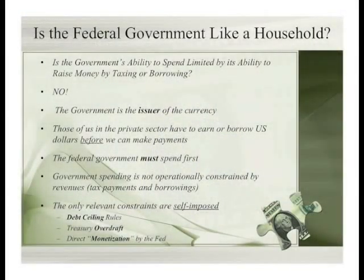Only the government's money can discharge a payment as a final means of payment. We are the users of the government's currency. In contrast, the government is the issuer of its currency — it is not like a household. It doesn't have to raise money by borrowing or collecting taxes in order to spend. Those of us in the private sector have to earn or borrow dollars before we can spend. The government must spend first. How could the government collect taxes in dollars first? It first had to have spent those dollars into existence. The spending has to come before the collection of taxes.